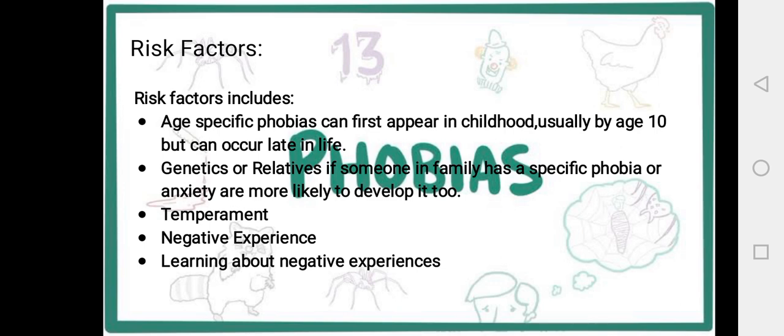What are the risk factors of specific phobia? The first is age — specific phobia can first appear in childhood, usually by age 10, but can also occur later in life. The second risk factor is genetics and family history — if you have a family history of specific phobia, you are at greater risk of developing it.